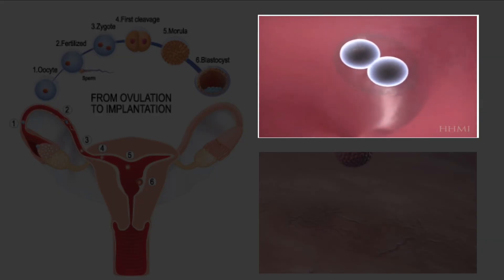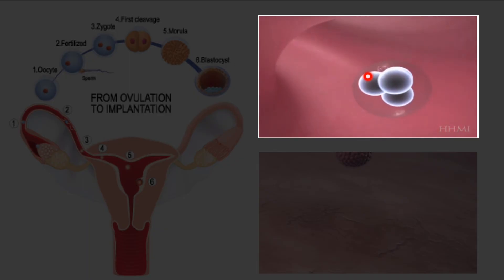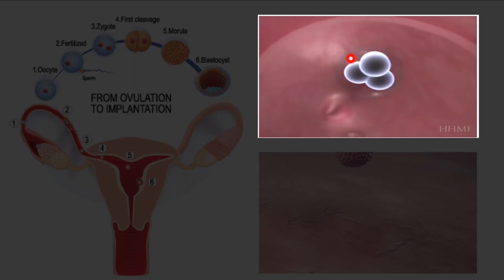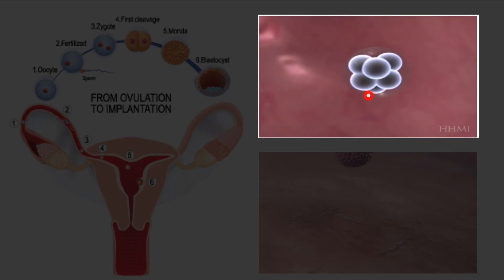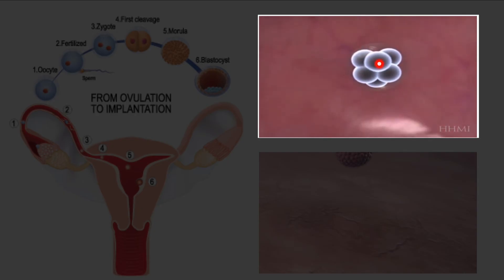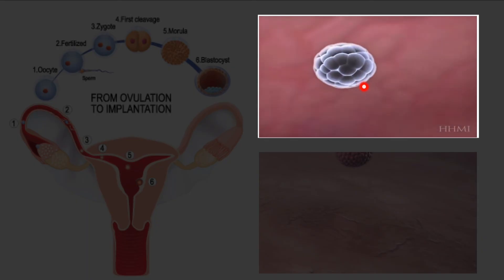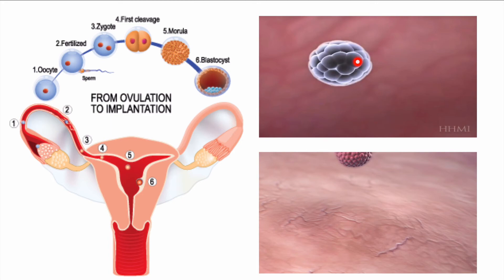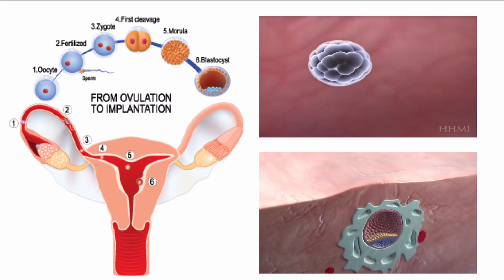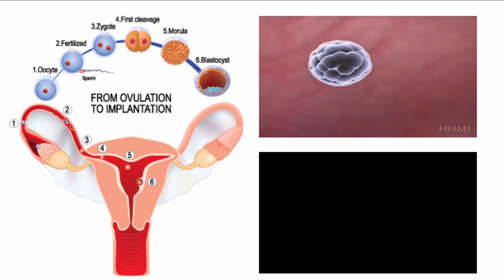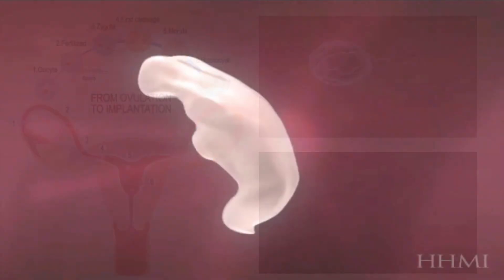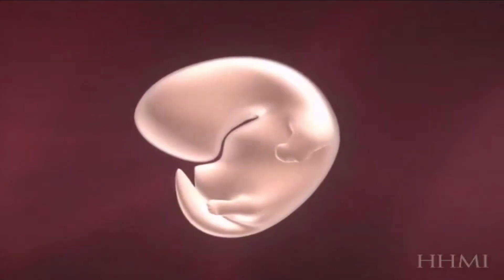That division is mitosis. One cell becomes 2, 2 becomes 4, 4 becomes 8, 8 becomes 16, 16 becomes 32, 32 becomes 64 — you get the point. The zygote turns into many cells, and that's what you see here: a ball of cells. Once it's a ball of cells, it can implant into the uterus wall and start to grow the structure we called a placenta. After that, development takes place.